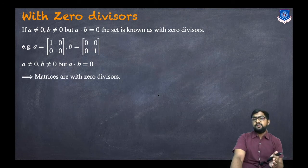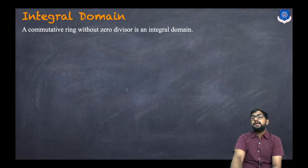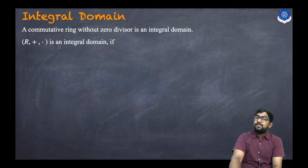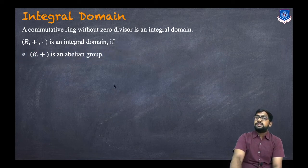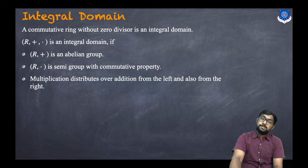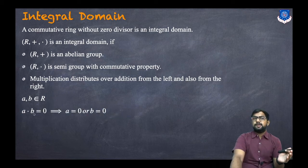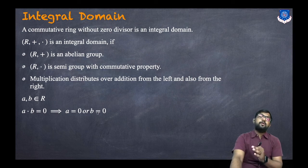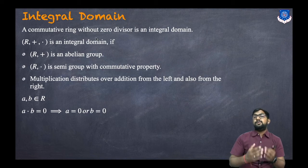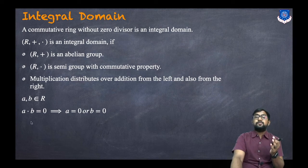Now let us discuss what is an integral domain. A commutative ring without zero divisors is an integral domain. So (R, +, ·) is an integral domain if: (R, +) is an abelian group; (R, ·) is a semigroup with the commutative property; multiplication distributes over addition from both left and right; and a·b = 0 implies a = 0 or b = 0. The first three conditions are for a commutative ring, and the last condition is for having no zero divisors.